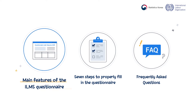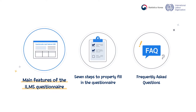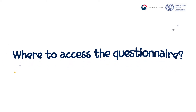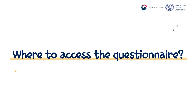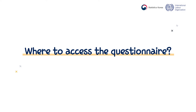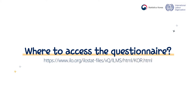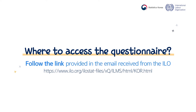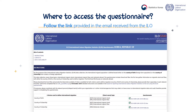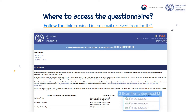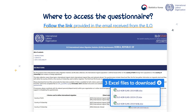First, let's see what the main features of the ILMS questionnaire are. To access the questionnaire, please follow the link provided in the email you received from the ILO, in which the ILO kindly asked your institution to take part in the ILMS data collection and to complete the ILMS questionnaire. That link takes you to the ILMS questionnaire page, which is country-specific and includes information on other contact persons and organizations of your country to which this data collection request was sent. In that page, you can also access the detailed user guide for reporting international migration statistics to the ILO.